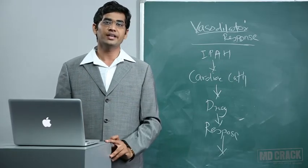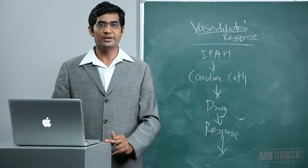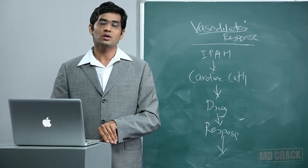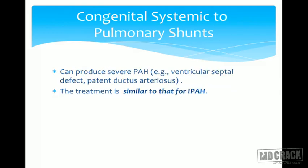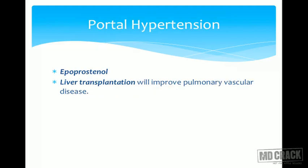For pulmonary hypertension associated with collagen vascular disease, treatment is the same as for IPAH but is less effective. For PH associated with congenital systemic-to-pulmonary shunts, the primary treatment is correction of the shunt, and all IPAH treatments can also be used.